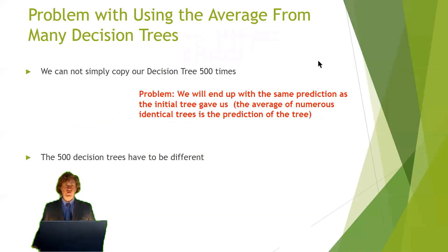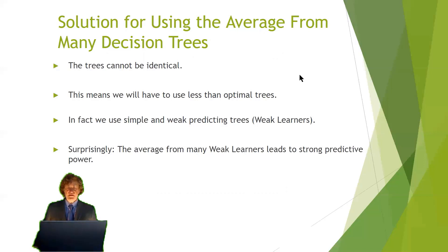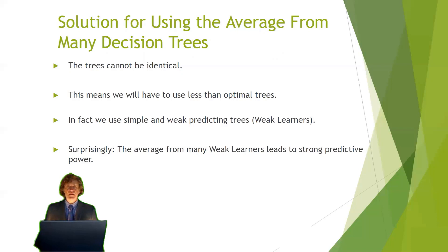Just using one decision tree and copying it 500 times would not help, because the average prediction from 500 identical trees would be the same as a single tree. So our trees have to be different. Since they cannot be identical, we cannot use the best tree 500 times — we have to use suboptimal trees. In fact, we use trees that are individually not good at all, called weak learners. The surprising thing is, combining 500 weak learners in a random forest and taking their majority vote gives us a pretty good prediction.